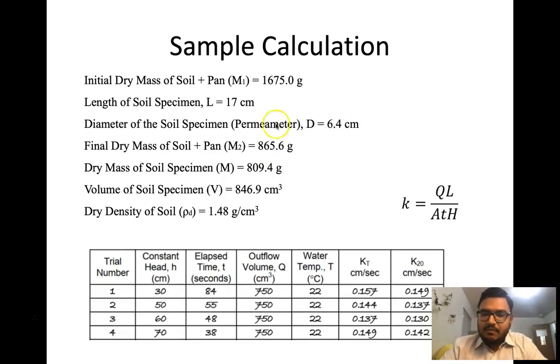This is the formula for determining the permeability coefficient for constant head test. In that case, Q is the volume of water, so we are measuring the volume with a measuring cylinder. L is the length of the soil sample, A is the cross section of the soil, T is the required time to collect that amount of water.